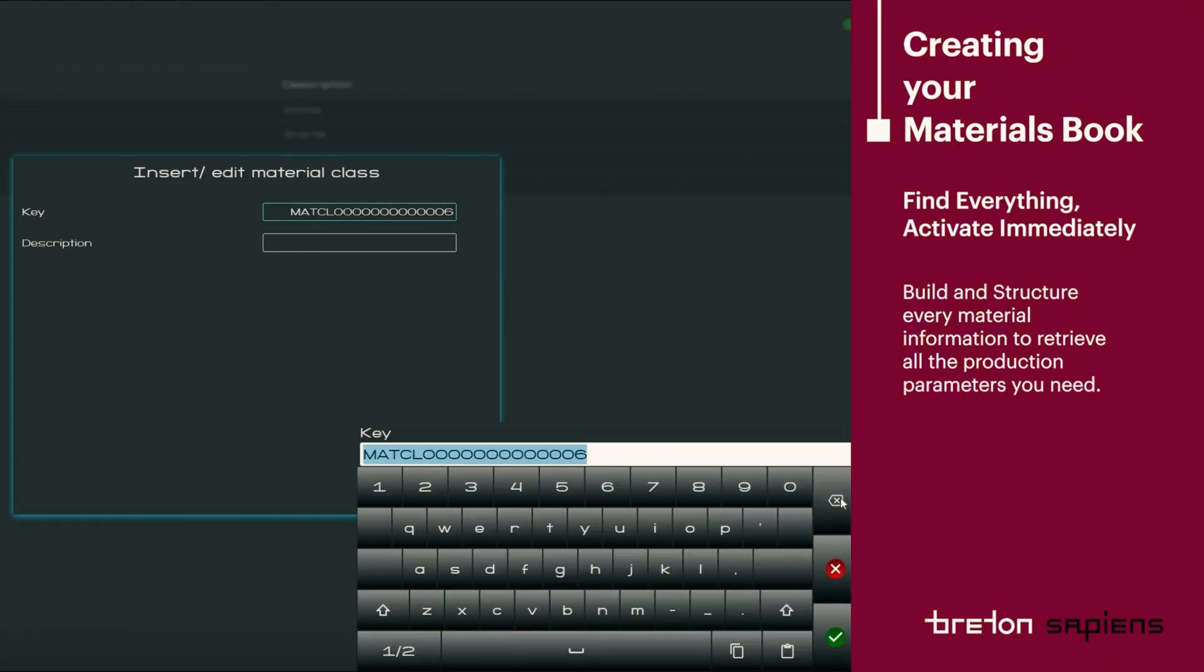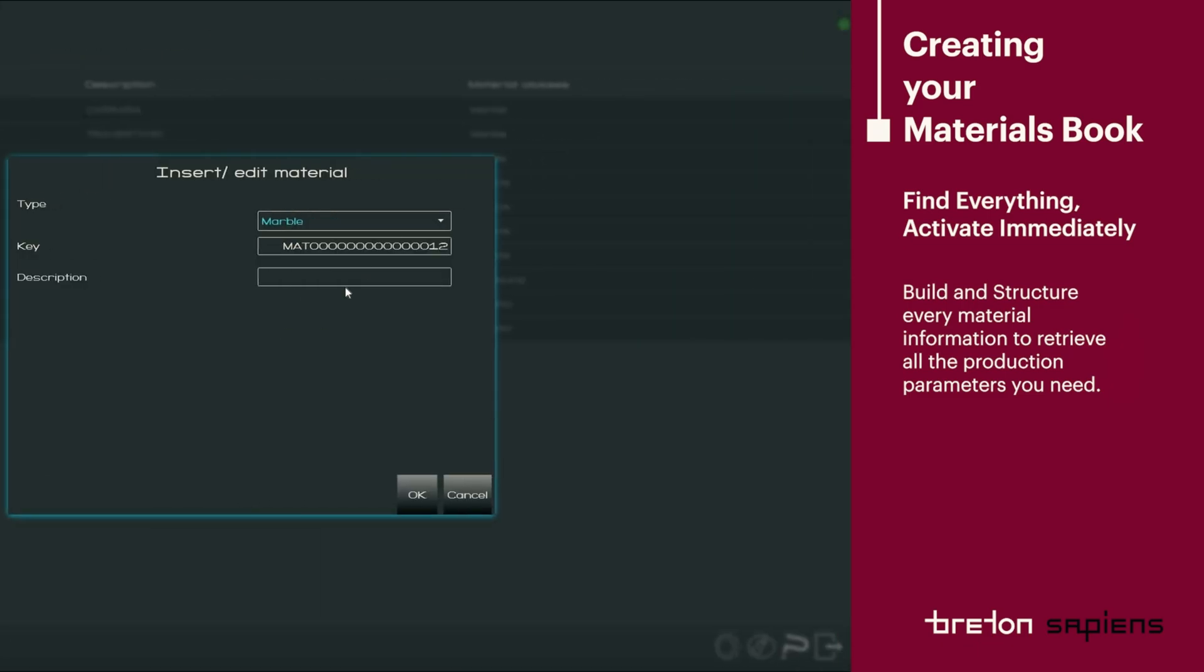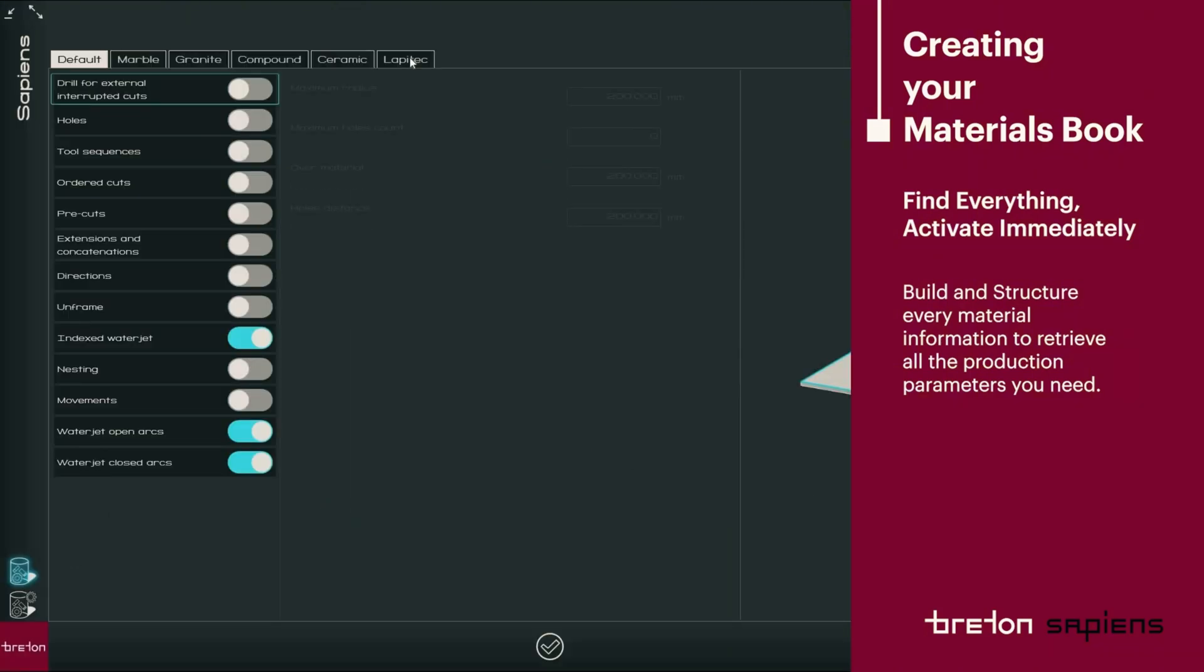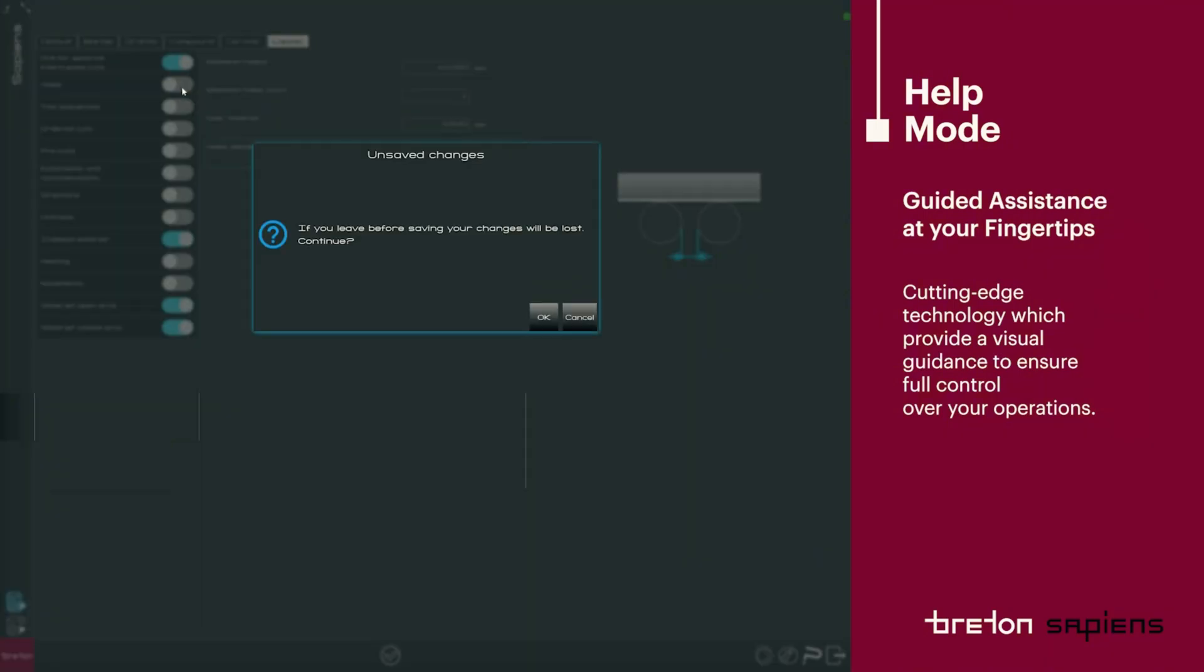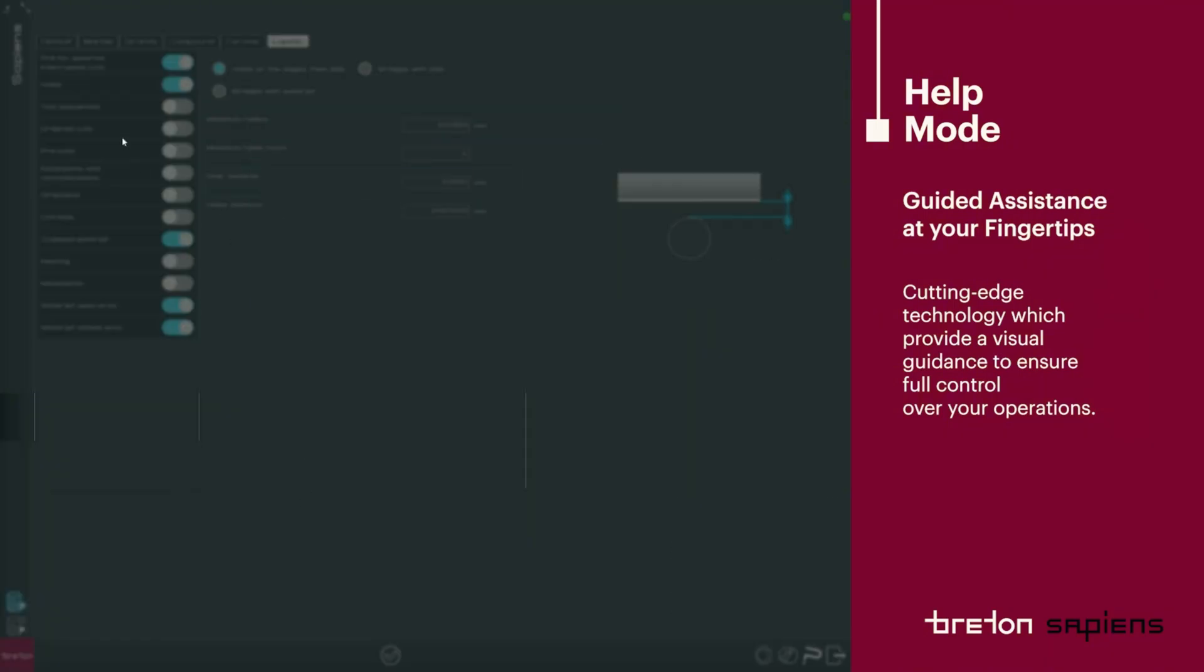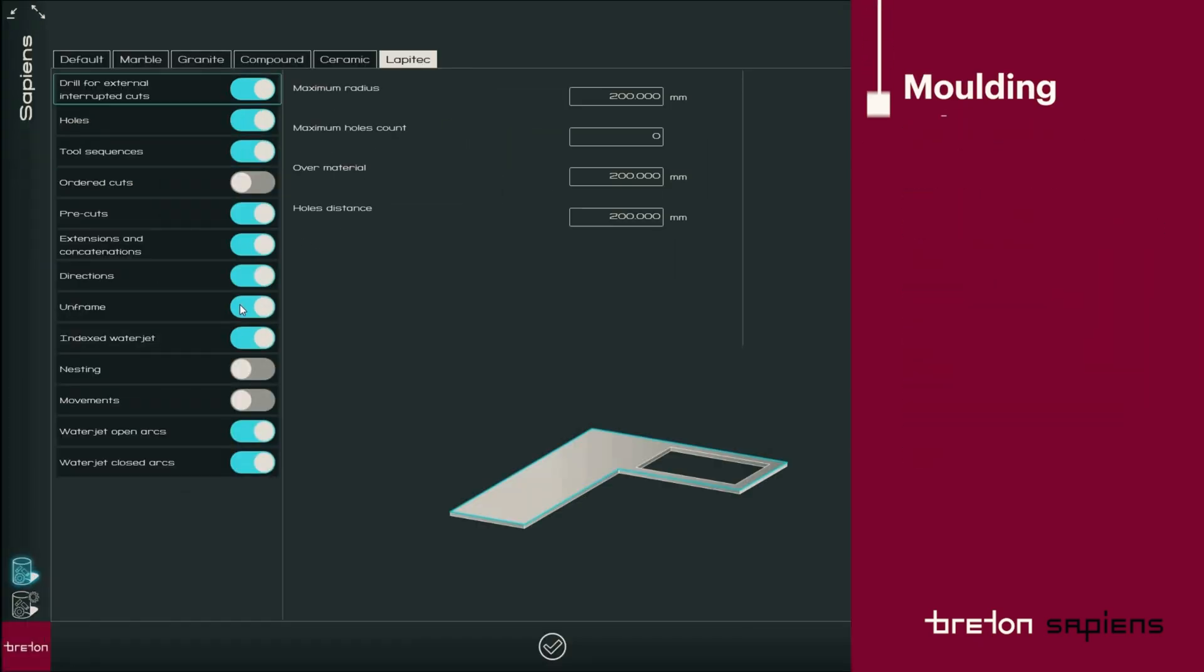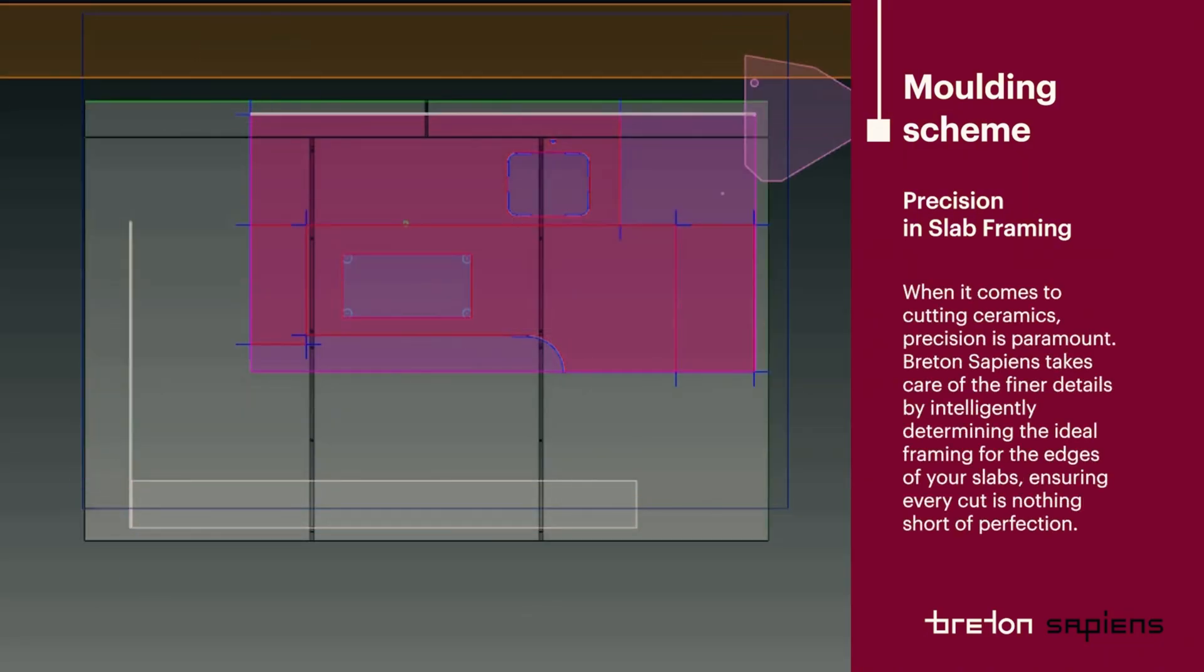For the first time in the business, we have a machine that controls not only the parameters in terms of RPM, feed rate, etc., but also strategy in terms of what is better for the machine to do in terms of cutting sequences, in terms of unframing the slabs, in terms of many other features.